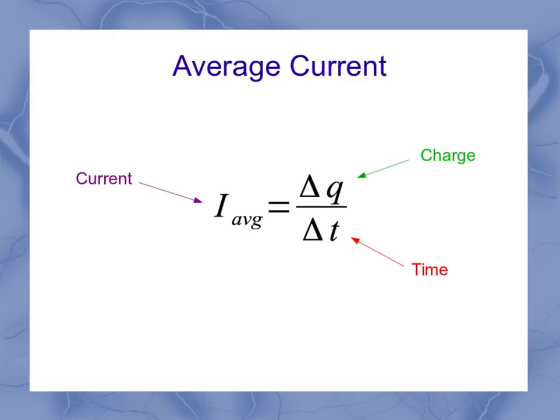We use the symbol I for current because C's been used way too much for all sorts of other variables.